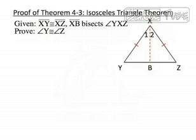We're given that segment XY is congruent to segment XZ, and that segment XB bisects angle YXZ. And we need to prove that angle Y is congruent to angle Z.